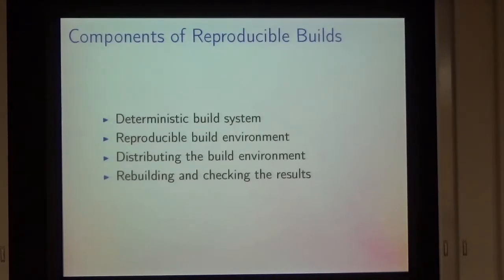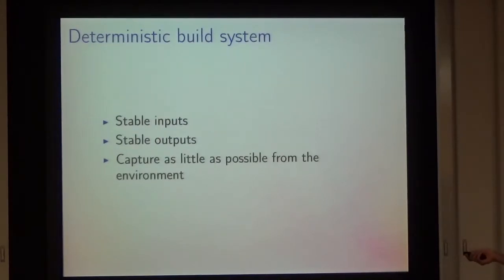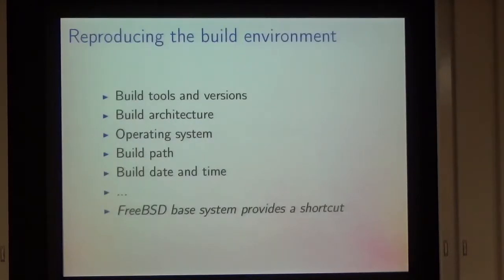To have a reproducible build, these are basically the components that we need. Deterministic build system means we want the same inputs and source code, the order that files are returned from the file system, that sort of thing. Stable outputs means the way that we generate output files - if we have a hash of multiple objects that we're going to write into a file, we want to make sure that we sort those before we output them, or make sure there's a deterministic output ordering. In general, we want to avoid bringing in anything from the environment that we don't explicitly want - the username, the hostname, the time, the timezone, where the machine's located. We want to make sure the build doesn't depend on any of that.